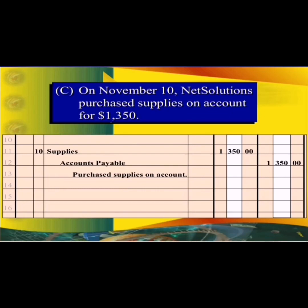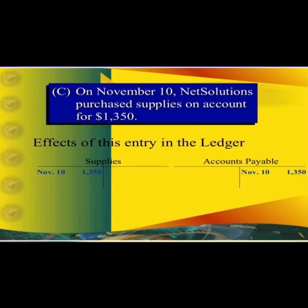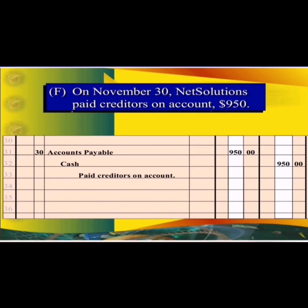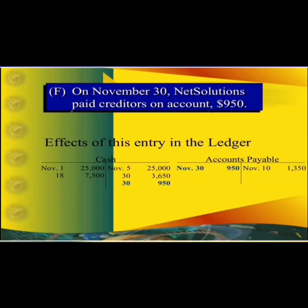The next transaction belongs to the 10th: supplies are debited and accounts payable are credited, meaning we bought supplies on a credit basis. In the ledger, supplies are debited with 1,350 and accounts payable are credited with the same amount. Another transaction on the 30th: accounts payable are debited with 950 and cash is credited with 950 on November 30th.